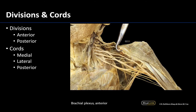Let's get our bearings with a much wider view of the brachial plexus. You can see the superior, middle, and inferior trunks here. These only run a short distance before each trunk divides into anterior and posterior divisions.